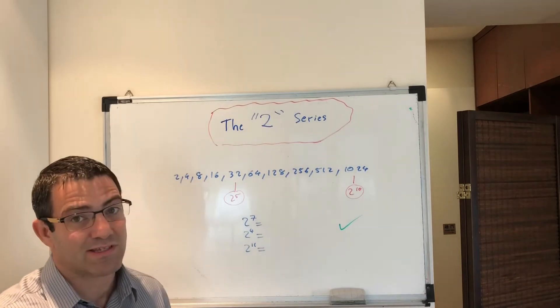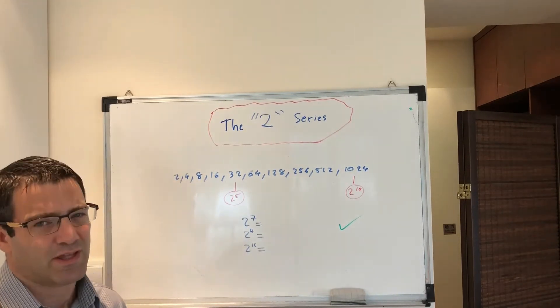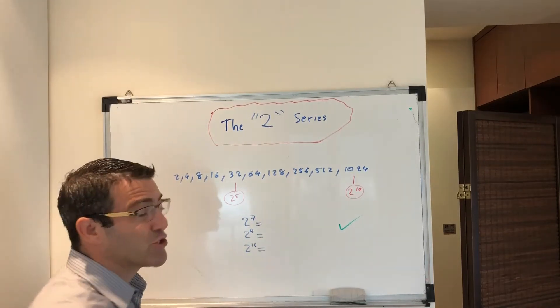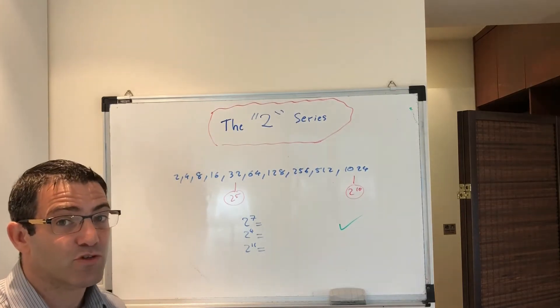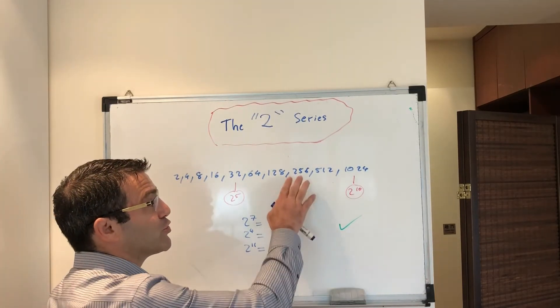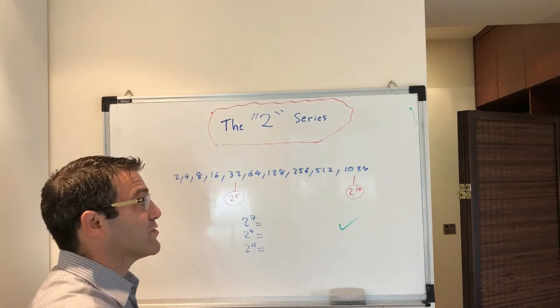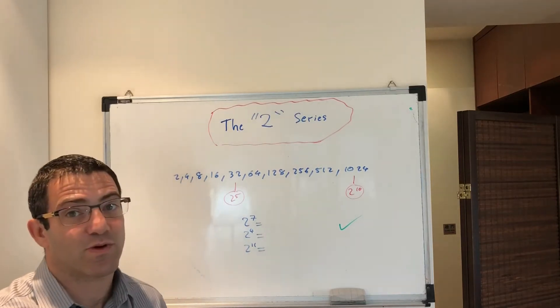32 times 2 is 64. 64 times 2 is 128. Okay, now we're getting into tricky territory. 128 times 2 is 256. 256 times 2, well, you've got to do 250 times 2, which is 500, and then 6 times 2, which is 12, so it's 512. And then 512 times 2 is 1024.